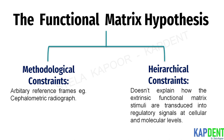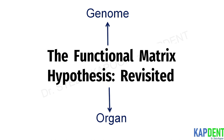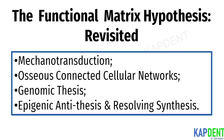The original Functional Matrix Hypothesis was revisited in the 1990s, and the newer version tries to bridge the gap and explain the operation from the genome to the organ level. The revisited Functional Matrix Hypothesis included four complementary concepts: mechanotransduction, osseous connected cellular networks, genomic thesis, and epigenetic antithesis and resolving synthesis.